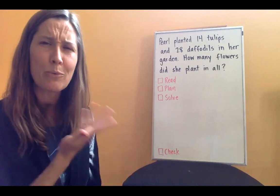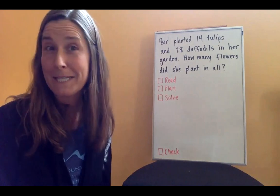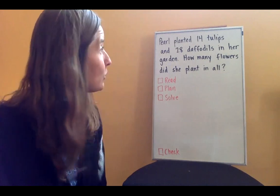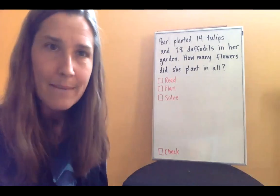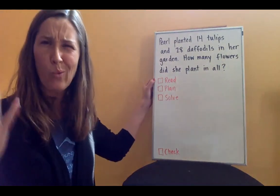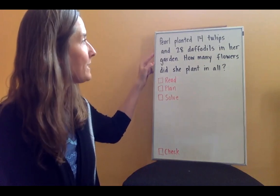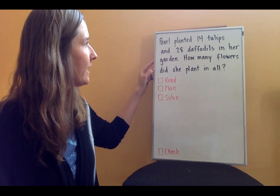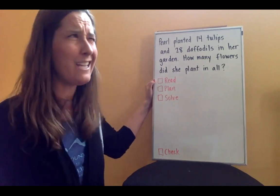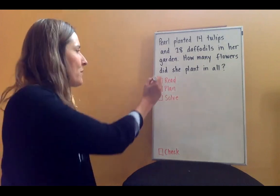All right, so let's take a look at the word problem that I created behind me here and it is about my friend Pearl. So Pearl just planted a garden and she wanted to do some flowers. And she did flower bulbs and she did tulips and daffodils. So the first thing I'm going to do is I'm going to read what the problem is and I'm going to be thinking about what's going on. Pearl planted 14 tulips and 28 daffodils in her garden. How many flowers did she plant in all? When you read through, you just want to kind of picture it in your mind. Okay, do I know what's happening? Yeah. So I'm going to check that box.